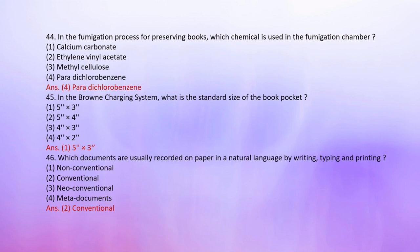Number 44: In the fumigation process of preserving books, which chemical is used in the fumigation chamber? 1. Calcium carbonate, 2. Ethanol vinyl acrylate, 3. Methyl cellulose, 4. Paradichlorobenzene. The correct answer is 4: Paradichlorobenzene.